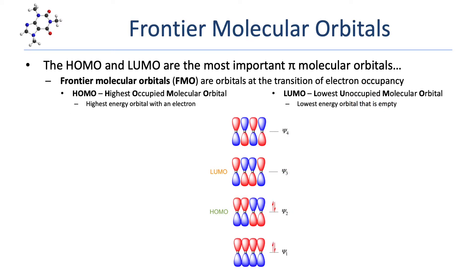When studying pericyclic reactions, the only orbitals we really need to consider are the frontier molecular orbitals, or FMOs. The frontier molecular orbitals are the two orbitals at the transition of electron occupancy, which are called the HOMO and LUMO. The HOMO is the highest-occupied molecular orbital — the highest-energy orbital with an electron. The LUMO is the lowest-unoccupied molecular orbital — the lowest-energy orbital that is empty. Here we see the pi molecular orbitals for 1,3-butadiene. In the ground state, the four pi electrons that form the two pi bonds occupy Psi-1 and Psi-2. Psi-2 is the HOMO and Psi-3 is the LUMO.